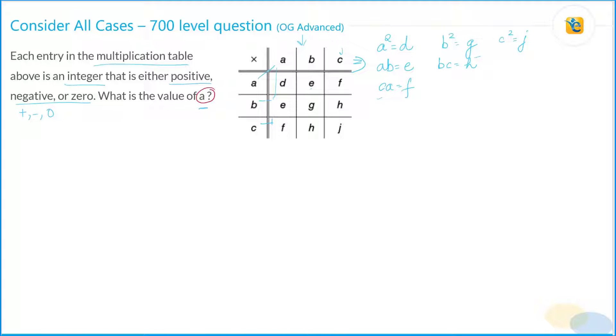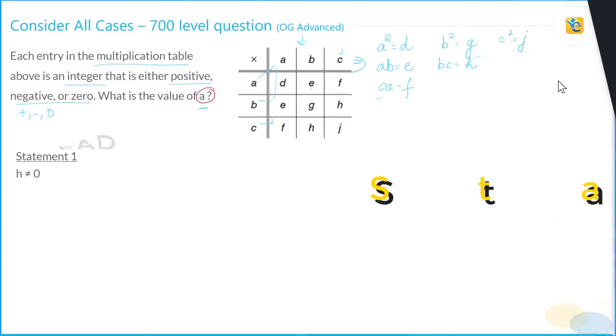So statement one says h is not equal to zero. Now where is h? H is here. H is what? BC is equal to h which is not equal to zero. What does that mean? That means that b and c are not equal to zero.